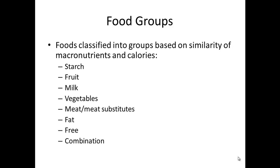Foods are classified into groups based on similarity in macronutrients: starch, fruit, milk, vegetables, meat and meat substitutes — and some meat substitutes will also appear in the starchy list. There is also a fat group, a free group, and a combination group. Students will need to learn to assign the different foods to these groups, memorize the number of calories in each group, and the number of grams of carbohydrate, fat, and protein. Students are not required to memorize serving sizes, as these can easily be searched in any database.